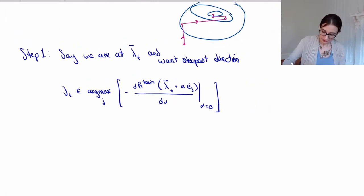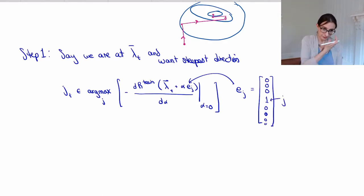At alpha equals zero. And then this e_j notation, what that means is it's zero except for a one in the jth location. So it's a vector of zeros with one exception.